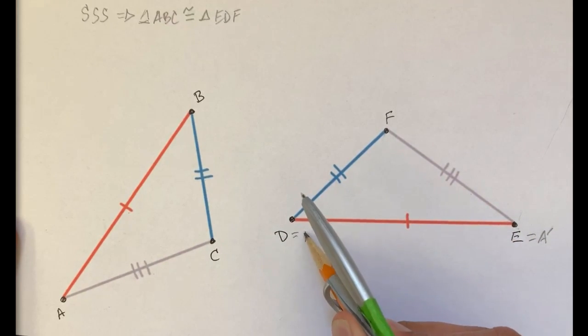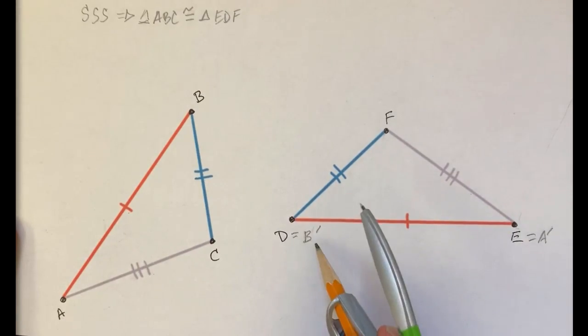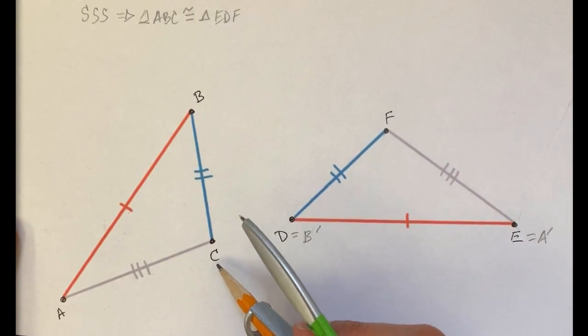So at that point, D would be equal to B prime, the point to which B is mapped. But the question is, where is C?